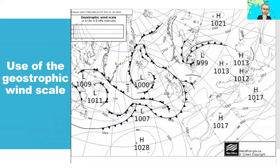So therefore, we are checking the chart. This is a weather chart from the Met Office in the UK, and we can see here the so-called geostrophic wind scale, which gives the result in knots, and the intervals are 4 hectopascal — which means we cannot use it for 5 hectopascal interval charts.